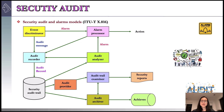The third element is alarm processor. Some of the events detected by the event discriminator are defined to be alarm events. For such events, an alarm is issued to the alarm processor. The alarm processor takes some actions based on the alarm. This action itself is an auditable event, so it is transmitted back to the audit recorder. The fourth element is security audit trail. The audit recorder creates a formatted record of each event and stores it in the security audit trail.